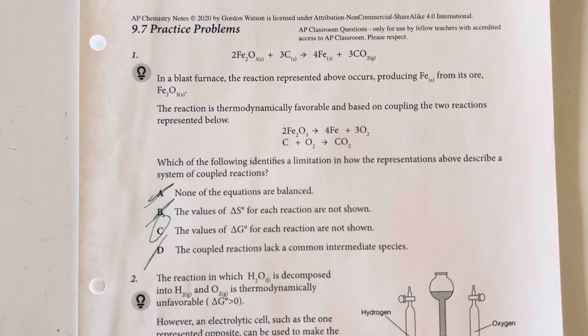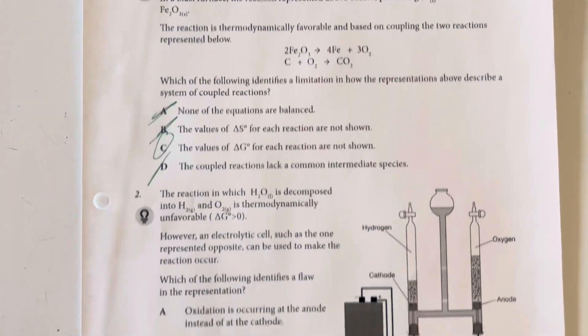So that delta G is not represented, we can't see that it is thermodynamically favorable. That is going to be our biggest problem with that representation above.